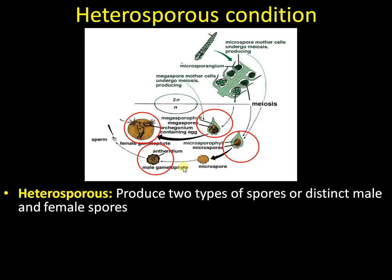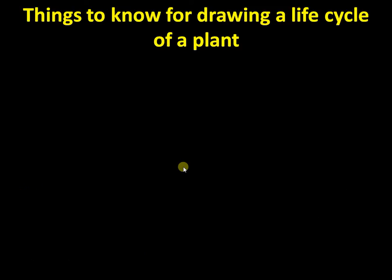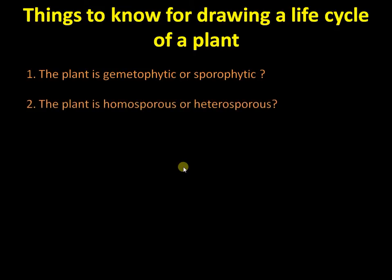So there are two different types of spores — a male spore and a female spore — giving rise to gametophytes having male and female reproductive organs separately. Examples include Selaginella, Marsilea, and all higher plants. Now, to draw the life cycle of a plant, we first need to know whether the plant is gametophytic or sporophytic, and secondly whether it is homosporous or heterosporous.